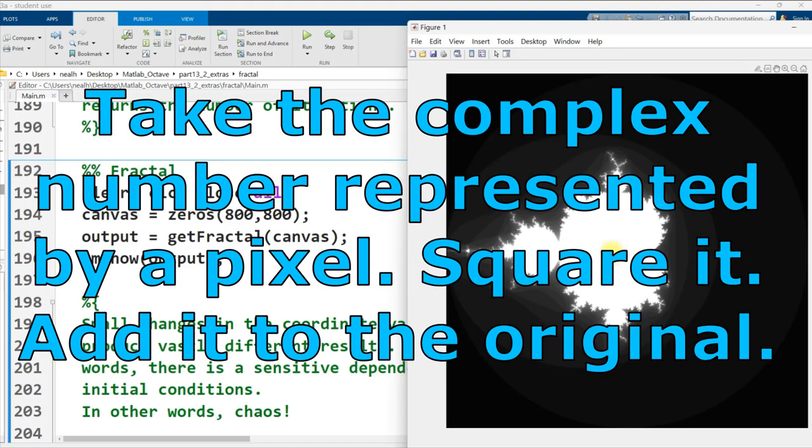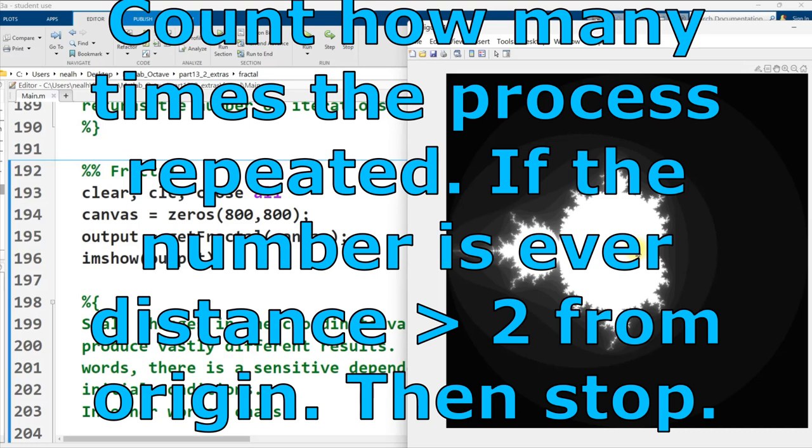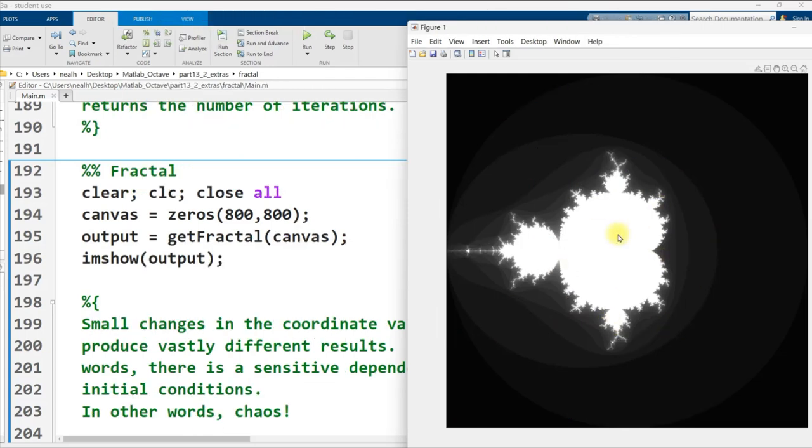So each of the pixels represents a particular complex number. And then the algorithm that we run goes like this: Square that number and add it to the original and get its distance from the origin. If it's bigger than two, stop, make that pixel dark. And the darker the pixel, the quicker it went beyond that distance two. Otherwise, keep repeating the process. And at some point, you have to give up. If the number is still less than distance two from the origin, color it white.